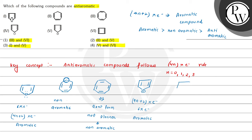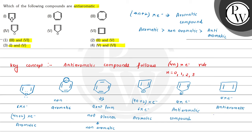The fifth compound has one carbocation and two double bonds, giving a total of 4 pi electrons, so this is an anti-aromatic compound. The sixth compound also has 4 pi electrons present, so this is also an anti-aromatic compound.